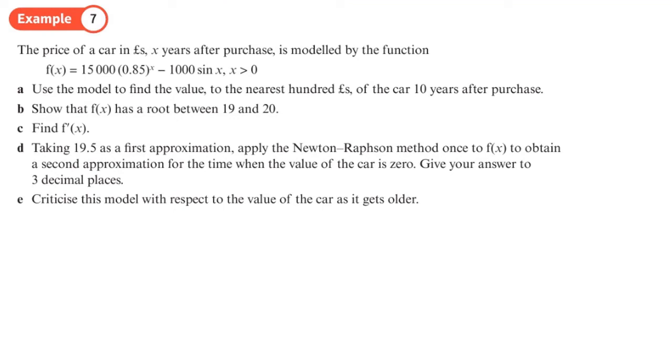So here is our function, and it says that the price of a car in pounds, x years after purchase, is modeled by that function. And obviously it's saying that x is greater than zero, so we can't go backwards in time to work out its cost before purchase, doesn't make any sense.